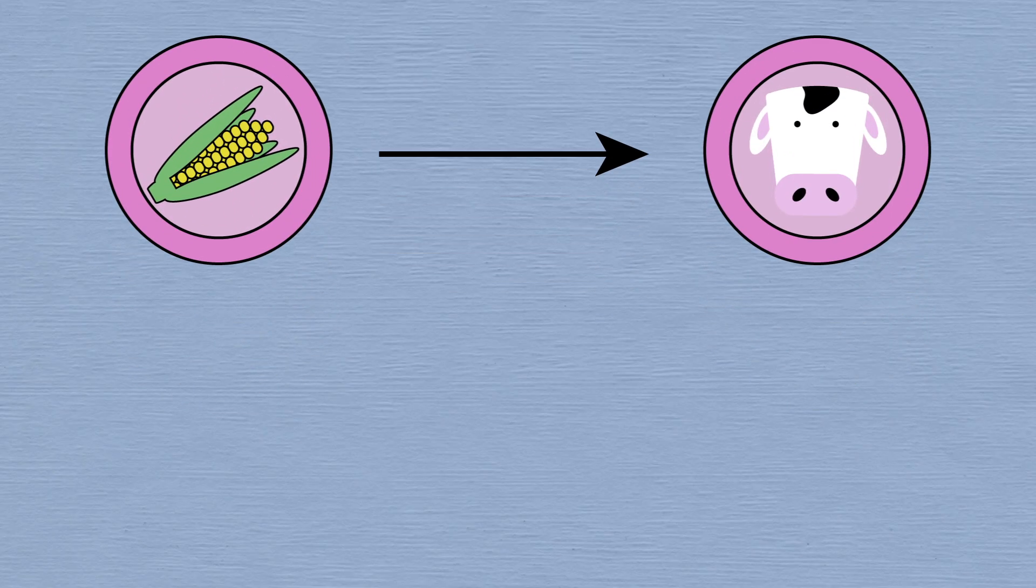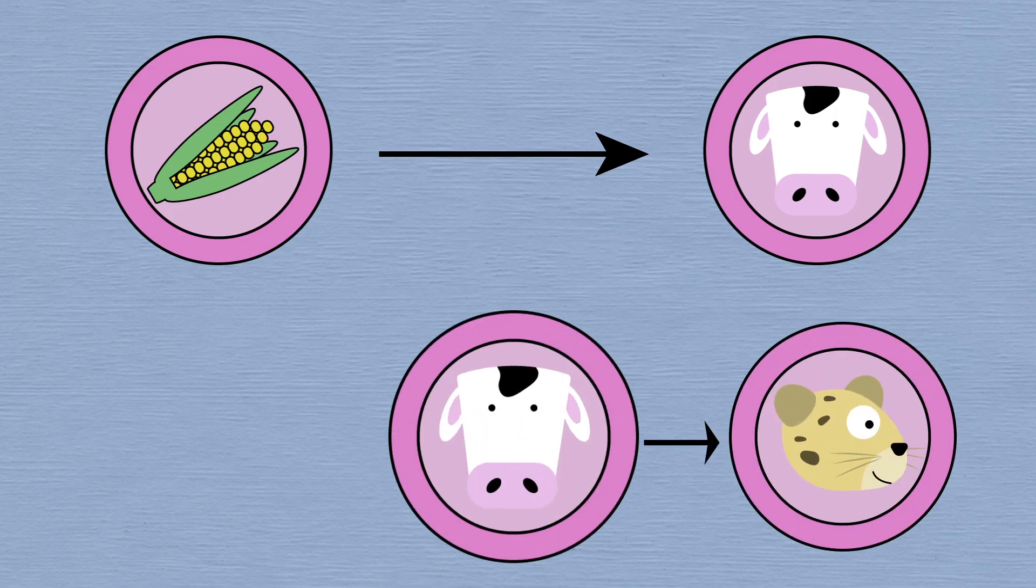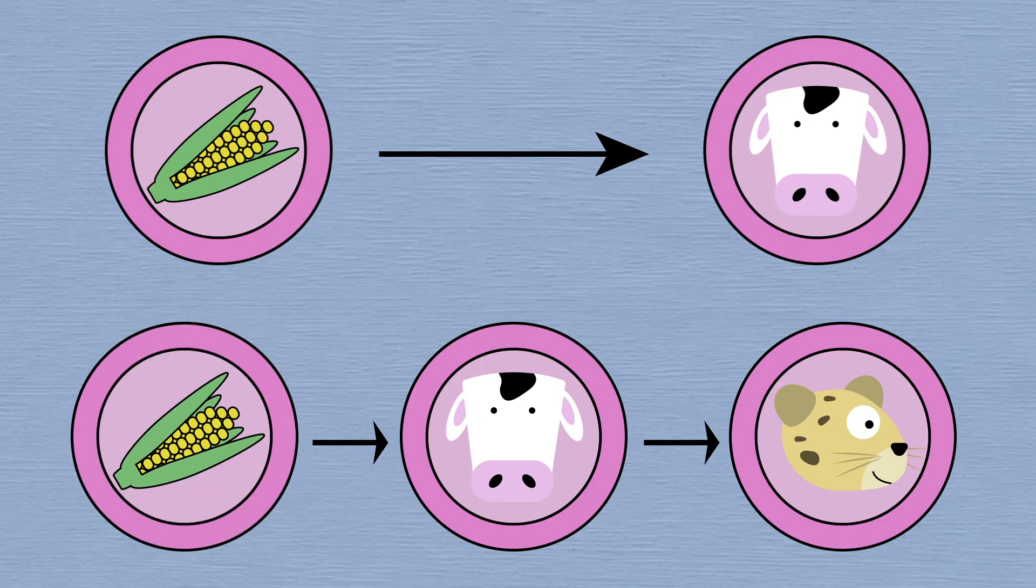So if you wanted to grow a 1,000-pound carnivore, you would have to feed it 10,000 pounds of herbivore grown on 100,000 pounds of corn. This is why no mammalian carnivore has ever been domesticated for food.